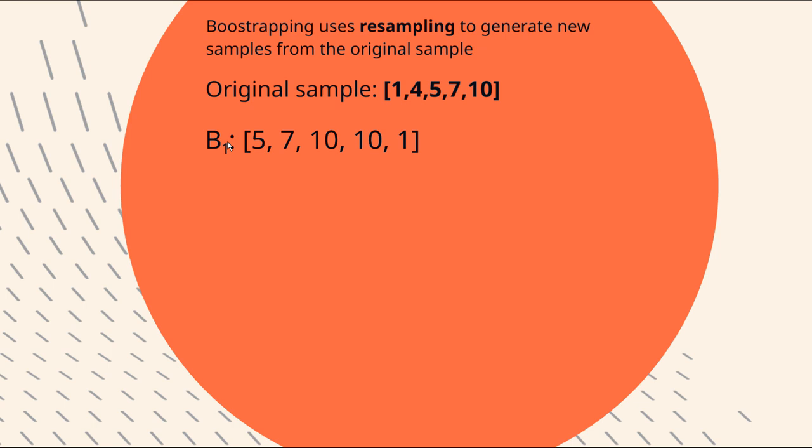Now once we have this particular bootstrapped sample, our replicated sample, we can find an estimate for the mean. And that happens to be 6.6. It's the mean of all of those. Now what bootstrapping does is it does this process again and again and again, many times in fact.